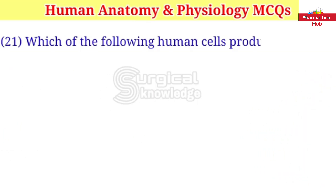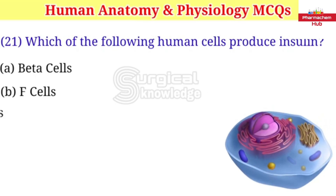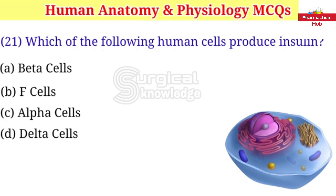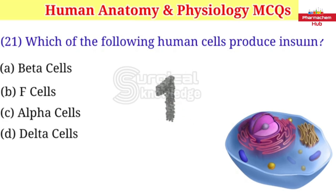Which of the following human cells produce insulin? A. Beta cells B. F cells C. Alpha cells D. Delta cells. Right answer is alpha cells.